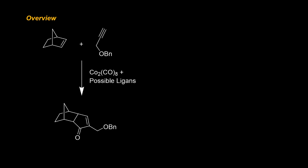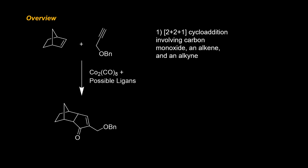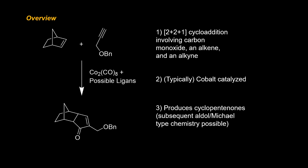The Pauson-Khand reaction is a 2+2+1 cycloaddition between carbon monoxide, an alkene, and an alkyne. This reaction is typically cobalt-catalyzed, but other metals such as rhodium can be used in order to make specific reaction outcomes more favorable. Specific ligation can also influence reaction outcomes. The products of these reactions are cyclopentanones, which allow for both aldol and Michael-type chemistry in subsequent steps if desired.